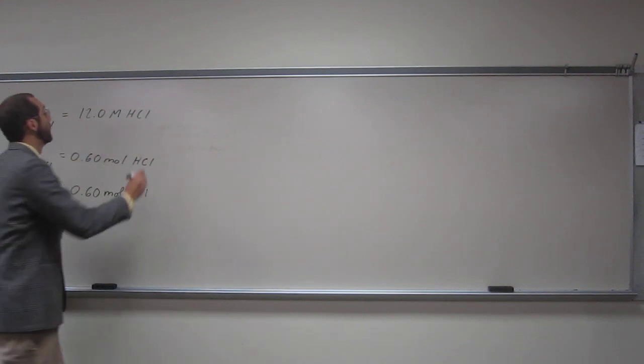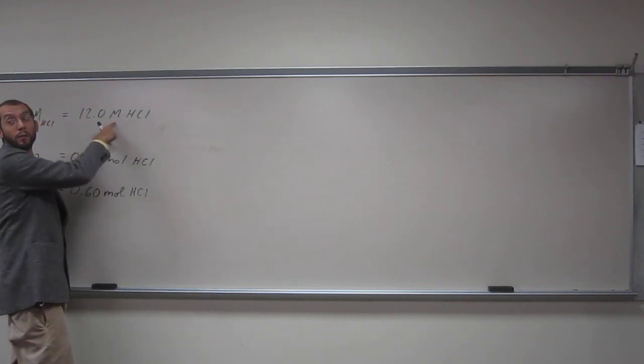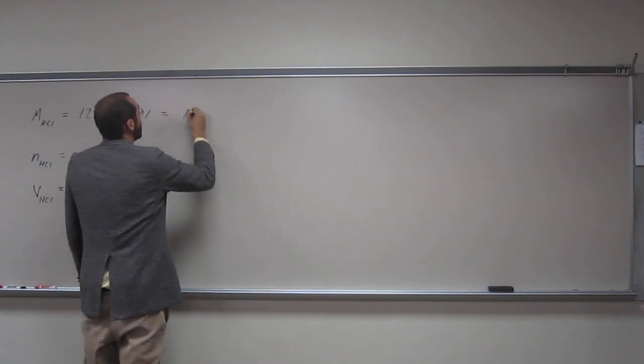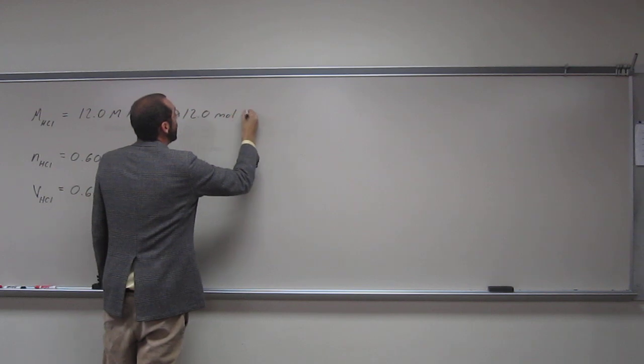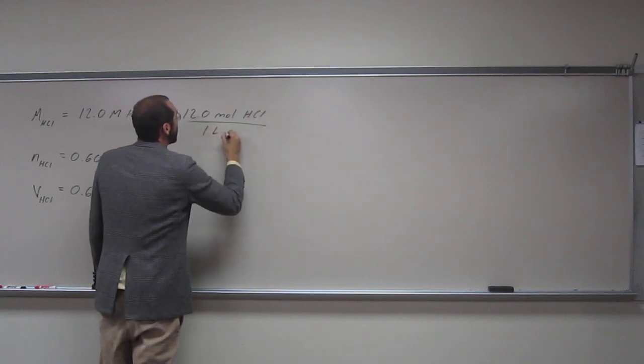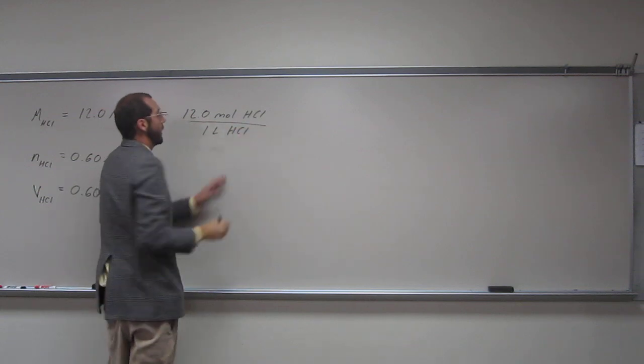Okay, but here we've got to remember that big M is moles per liter, right? So this means 12.0 moles of HCl per one liter of HCl solution.